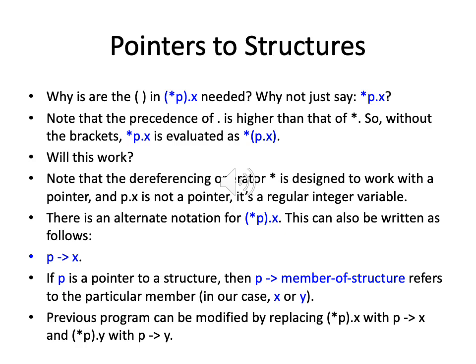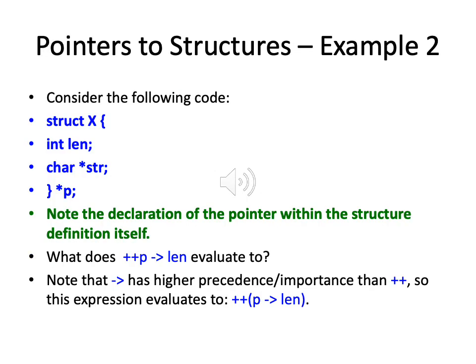As mentioned, there is an alternate notation for (*p).x — and that is p->x. The rule is: if p is a pointer to a structure variable, then p->member refers to that particular member. In the case of struct point, it can refer to either x or y. So (*p).x is syntactically equivalent to p->x, and (*p).y is syntactically equivalent to p->y. We will see this arrow notation frequently when we discuss more data structures in detail.